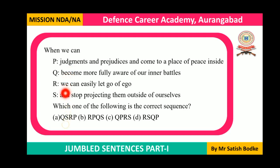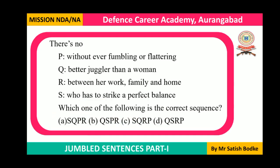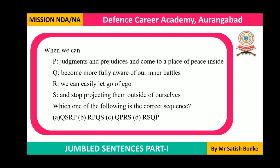After a modal auxiliary we always use V1, so 'become' is the correct start. The answer obviously starts with Q. Two options start with Q: option A and option C. We can eliminate options B and D. So our answer will be either A or C. The sequence so far is: 'when we can become more fully aware of our inner battles.'